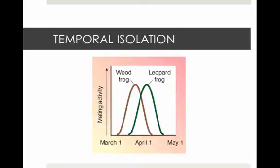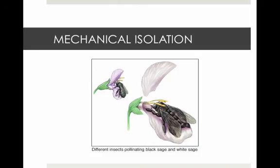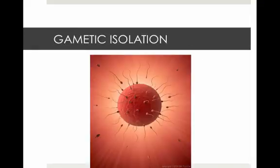Temporal isolation is when two species that breed at different times will not have a chance to breed with each other. Mechanical isolation is anatomical incompatibility — sex organs are not compatible; for example, flower shape only accommodates a certain pollinator. Gametic isolation occurs even when sperm and egg are mixed — fertilization doesn't occur and the gamete doesn't form.